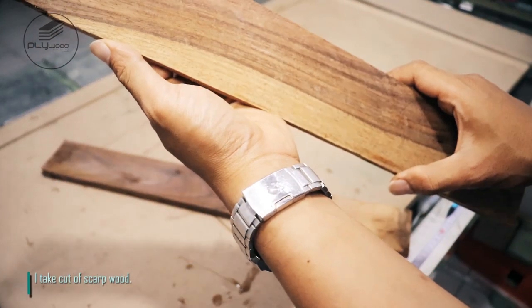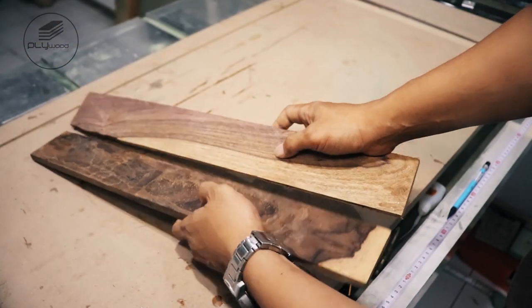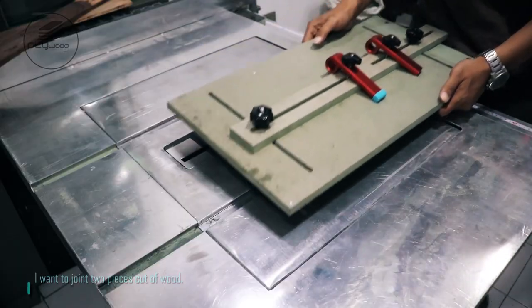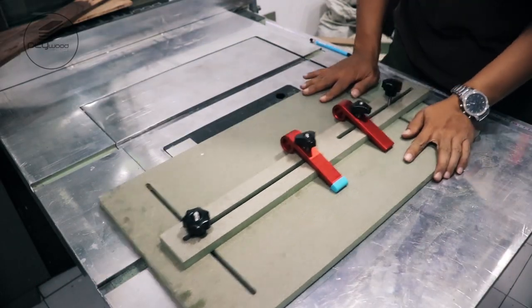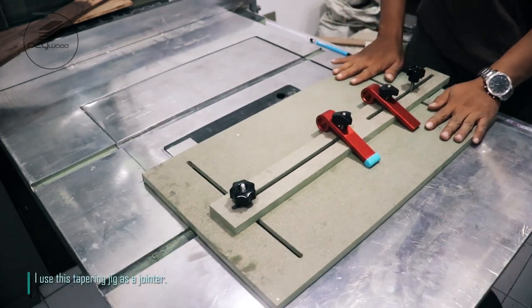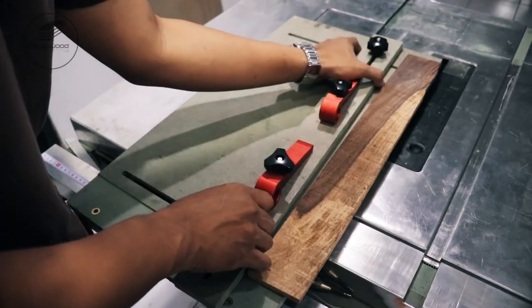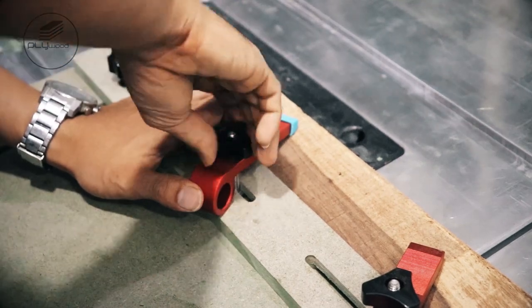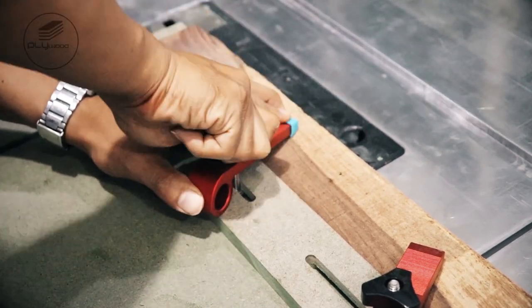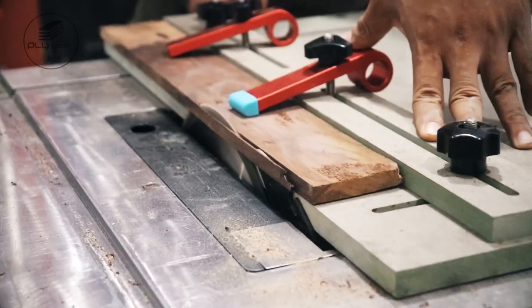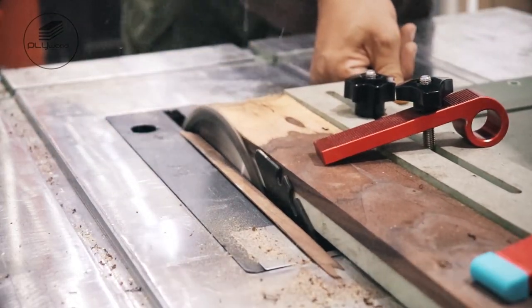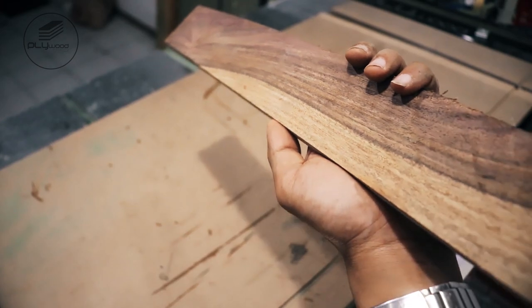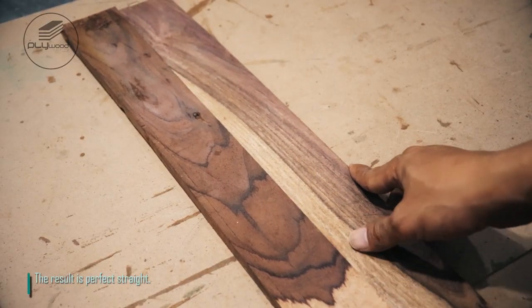I take cut of scrap wood. I want to join two pieces cut of wood. I use this tapering jig as a jointer. The result is perfect straight.